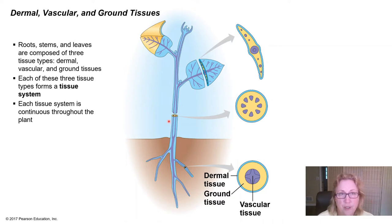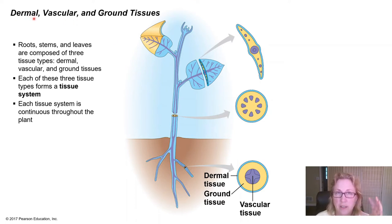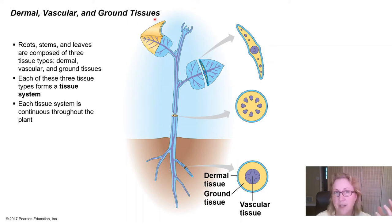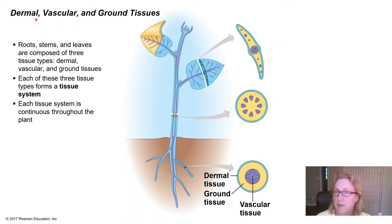The tissues of the plant are broken into three general categories: dermal tissues, which are generally on the surface of leaves, stems, and roots; vascular tissues, which transport water, minerals, and sugar around the plant; and ground tissues, which are the rest — if it's not vascular and not on the outside, then it's a ground tissue.